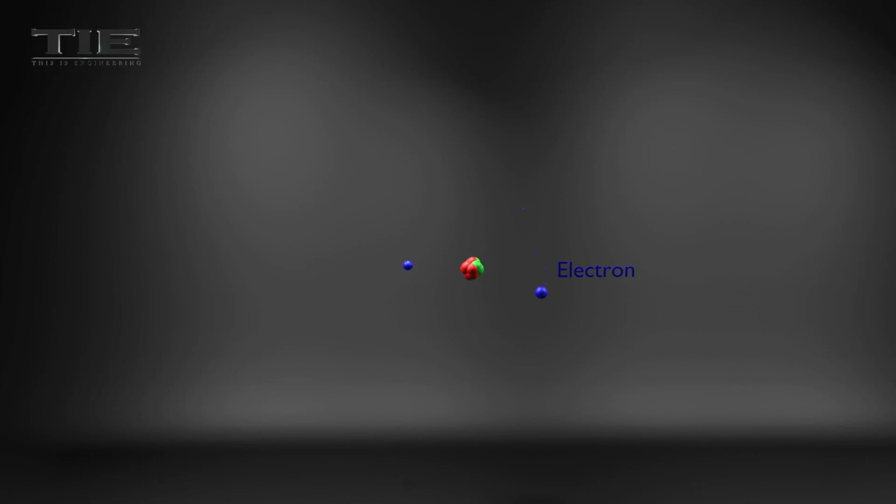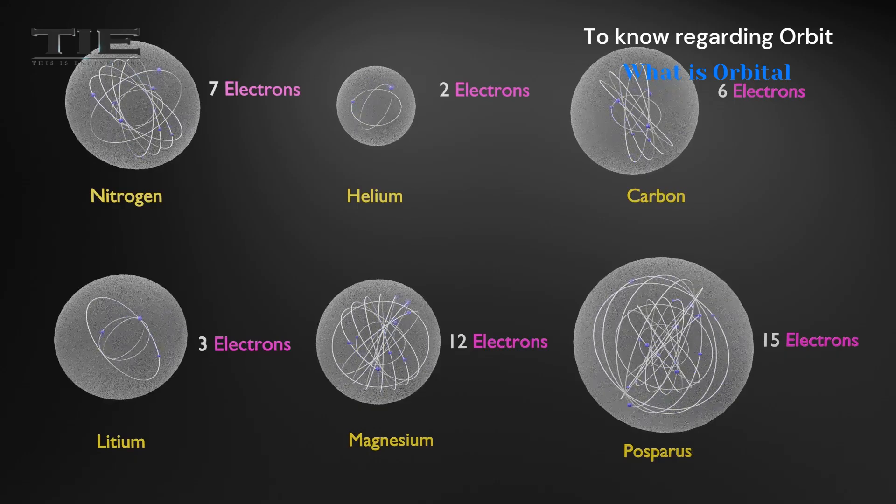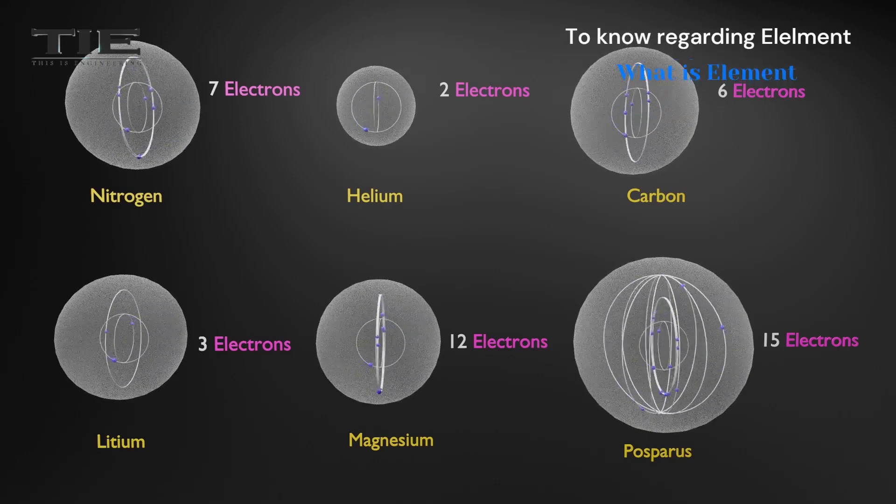An electron is a very light particle that spins around the center of the atom. Electrons move in an orbit. The number of electrons in an atom varies from element to element.